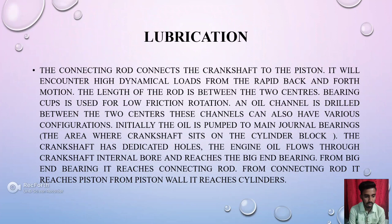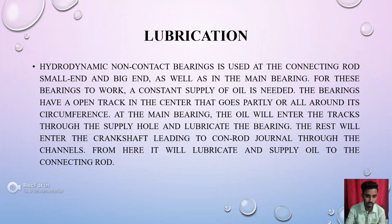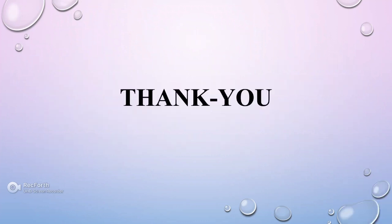Lubrication of connecting rod: The connecting rod connects the crankshaft to the piston and encounters high dynamic loads from the rapid back-and-forth motion. The length of the rod is measured between the two centers. Wearing cups are used for low friction rotation, and an oil channel is delivered between the two centers, which can have various configurations. Initially, oil is supplied to the main journal bearing, the area where the crankshaft sits on the cylinder block. The crankshaft has dedicated passages through which engine oil flows through its internal channels and reaches the big end bearing. A hydrodynamic non-contact bearing is used at the connecting rod small end and big end, as well as in the main bearing. For this bearing to work, a constant supply of oil is needed. The bearing has an oil groove in the center that goes partly or all around its circumference.